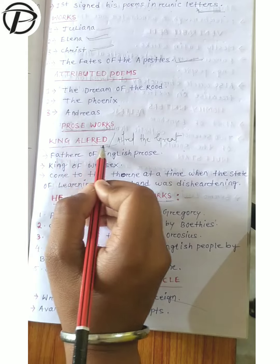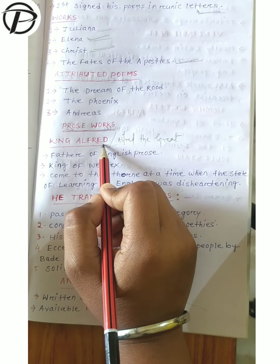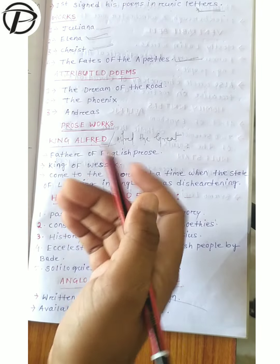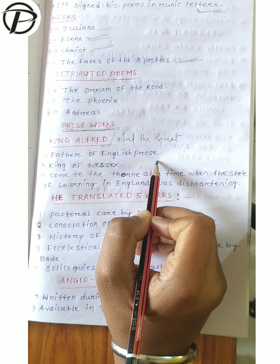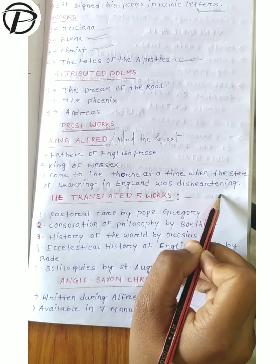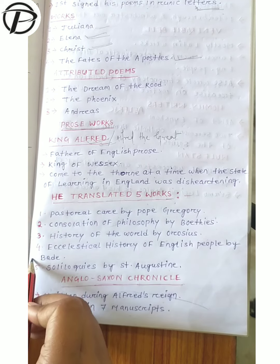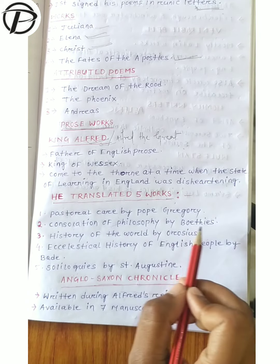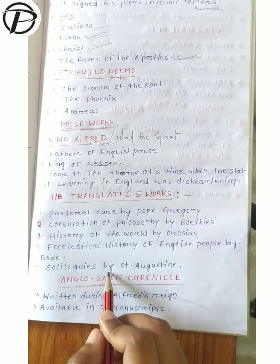Then for prose works, that is King Alfred, also called Alfred the Great. He is very important because everything discussed so far was poetry, but in prose work there is only King Alfred. He is the father of English prose and he is the king of Wessex. He came to the throne at a time when the state of learning in England was disheartening. He translated five works: Pastoral Care by Pope Gregory, Consolation of Philosophy by Boethius, History of the World by Orosius, Ecclesiastical History of the English People by Bede, and Soliloquies by Saint Augustine.